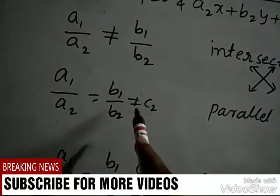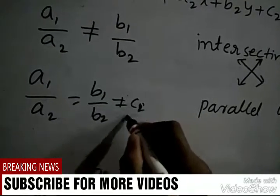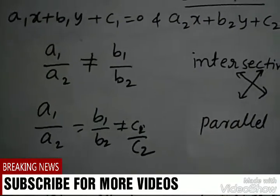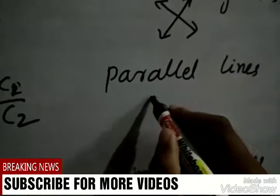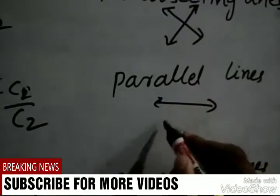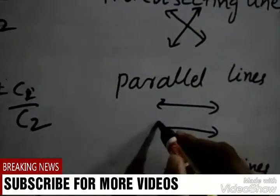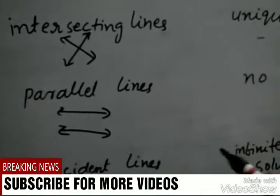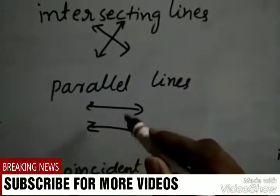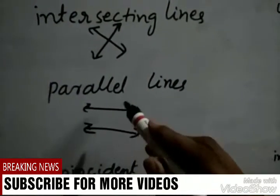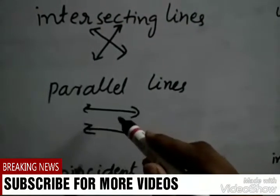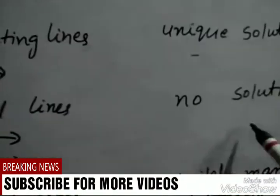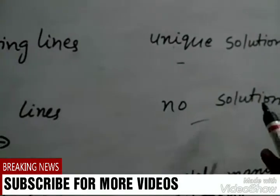The second condition is: if a1/a2 is equal to b1/b2 but not equal to c1/c2, then that type of lines are parallel lines. Since parallel lines do not intersect each other, there exists no solution.